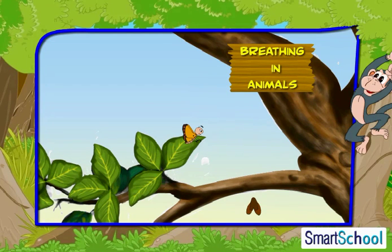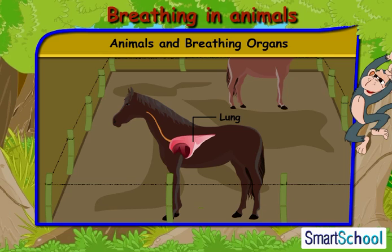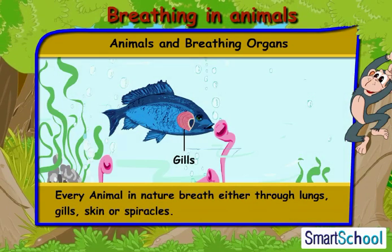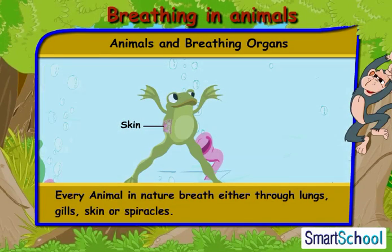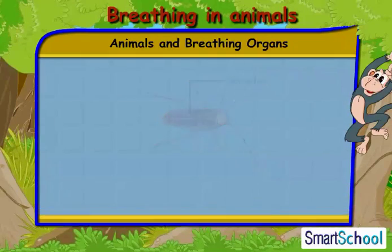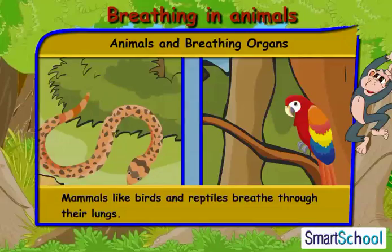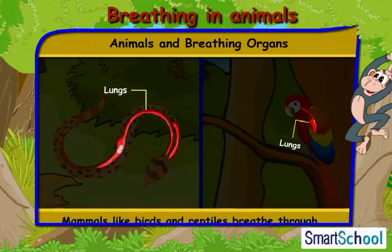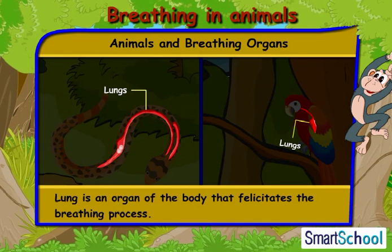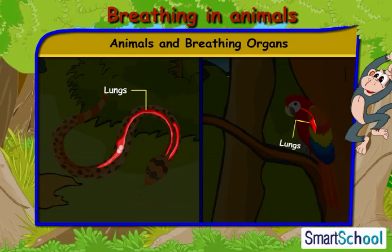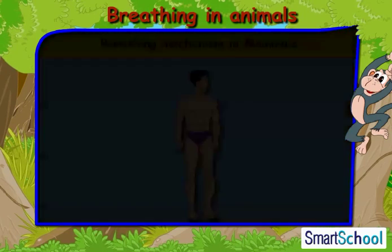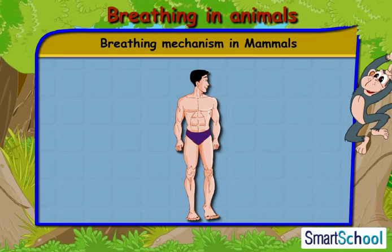Breathing in animals: in this module we will understand about the breathing processes in various animals. Every animal in nature breathes either through lungs, gills, skin, or spiracles. Mammals, birds, and reptiles breathe through their lungs. The lung is an organ of the body that facilitates the breathing process. Now let us discuss the breathing mechanism in detail, starting with the breathing process in mammals.